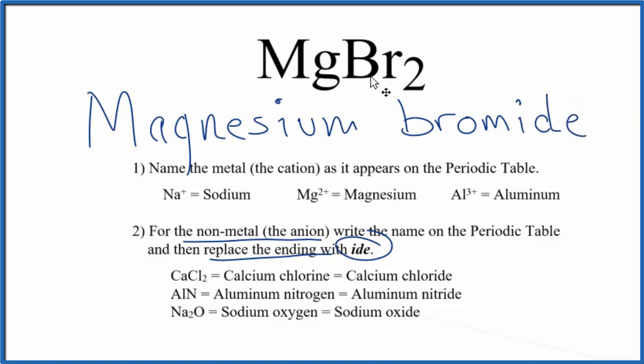So this is the name for MgBr2, magnesium bromide. If you're asked to go from the name to the formula, you need to realize magnesium forms two plus ions when it bonds, bromine one minus. So we need two of these bromides here to balance out this two plus.